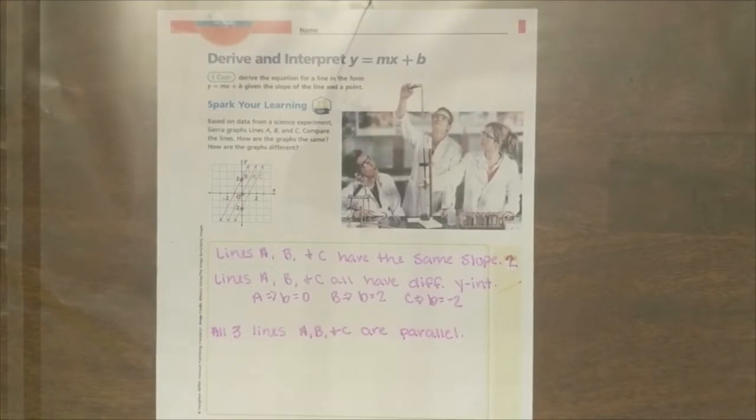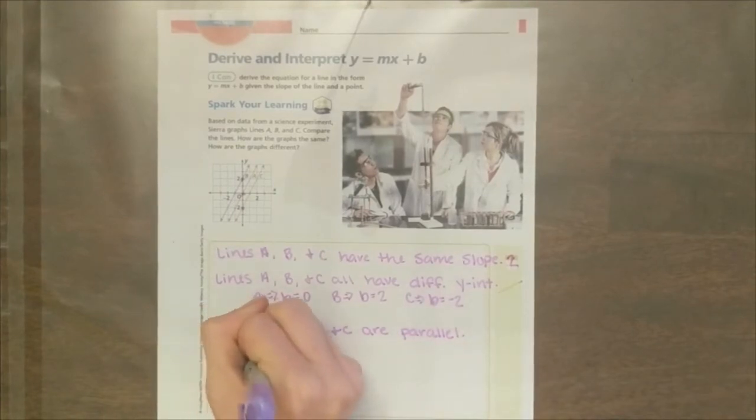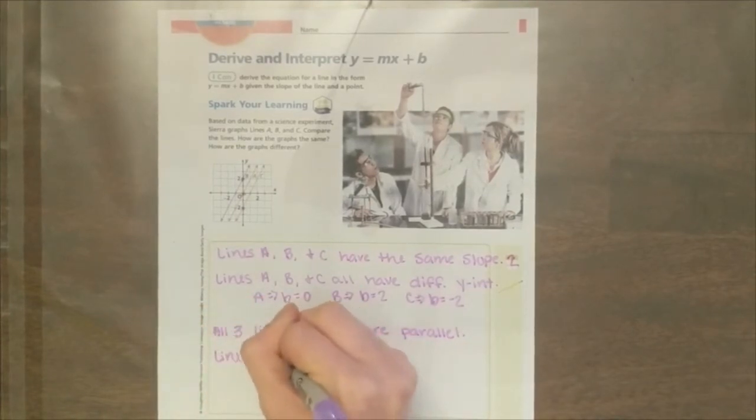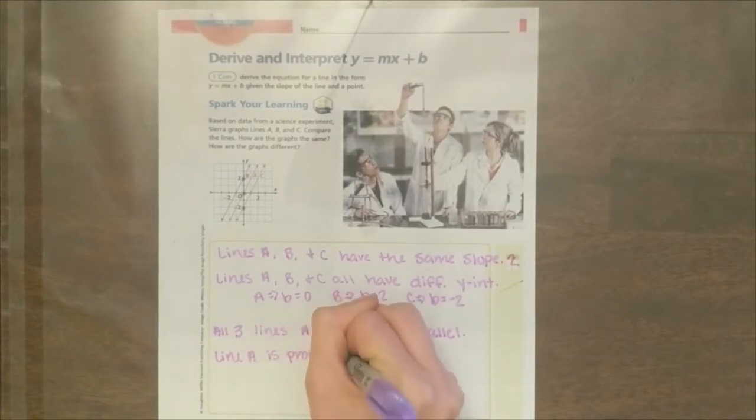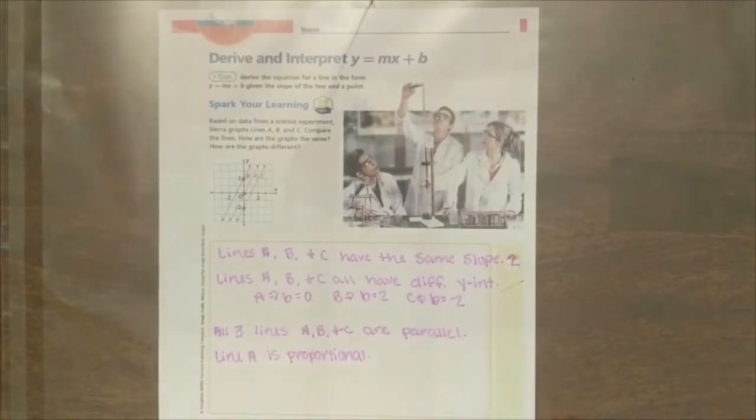Now, some other aspects we can evaluate is last week, Ms. Stennett talked to you about lines being proportional versus non-proportional. To be a proportional line, the line has to go through the origin, which is the ordered pair 0, 0. We only have one line that successfully does that, and that is line A. So line A is our only proportional line. Lines B and C are non-proportional.